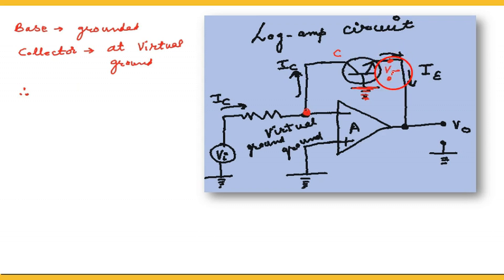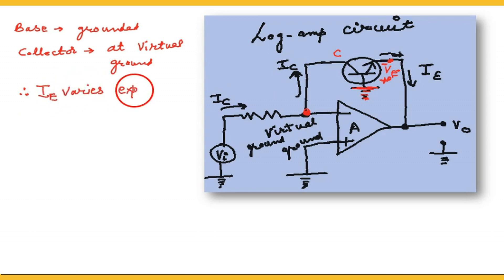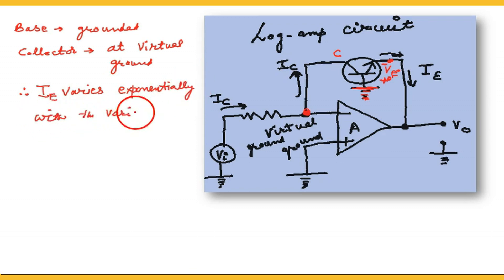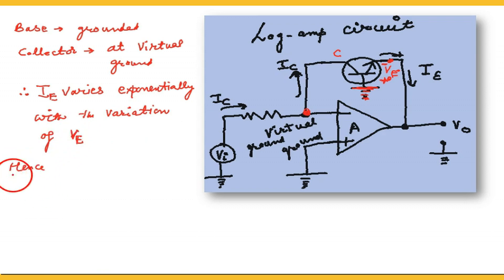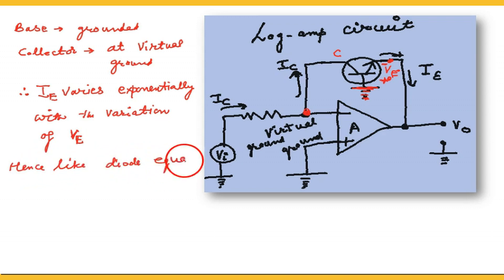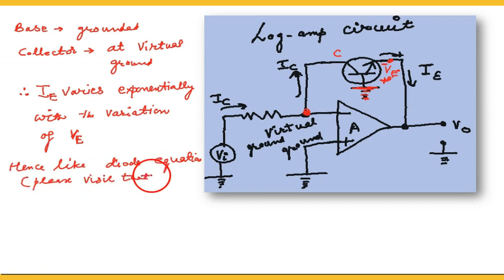The effective terminal is the emitter, and the transistor will act like a diode. The voltage here will be VE — the emitter voltage with respect to ground. The emitter current IE varies exponentially with the variation of VE, just like a diode. The transistor acts like a diode, and the emitter current varies exponentially with the emitter voltage.